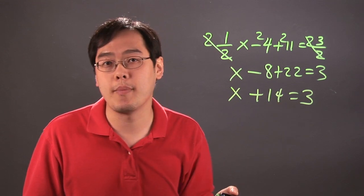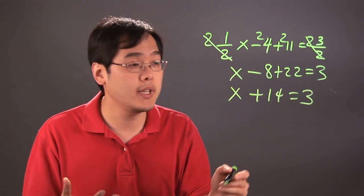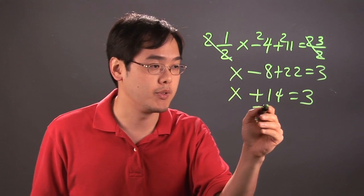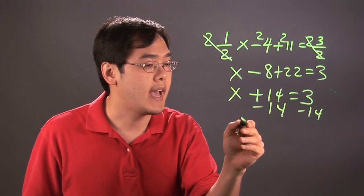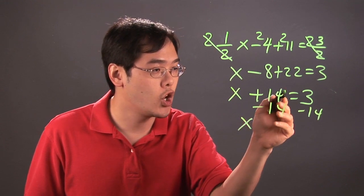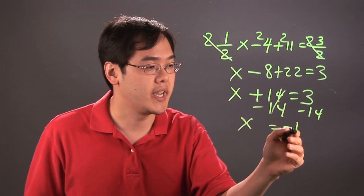So positive 14, you have a positive integer, and then to solve for x completely, you want to balance by subtracting 14 on both sides, and you have x, 14 minus 14 are gone, and then 3 minus 14 is negative 11.